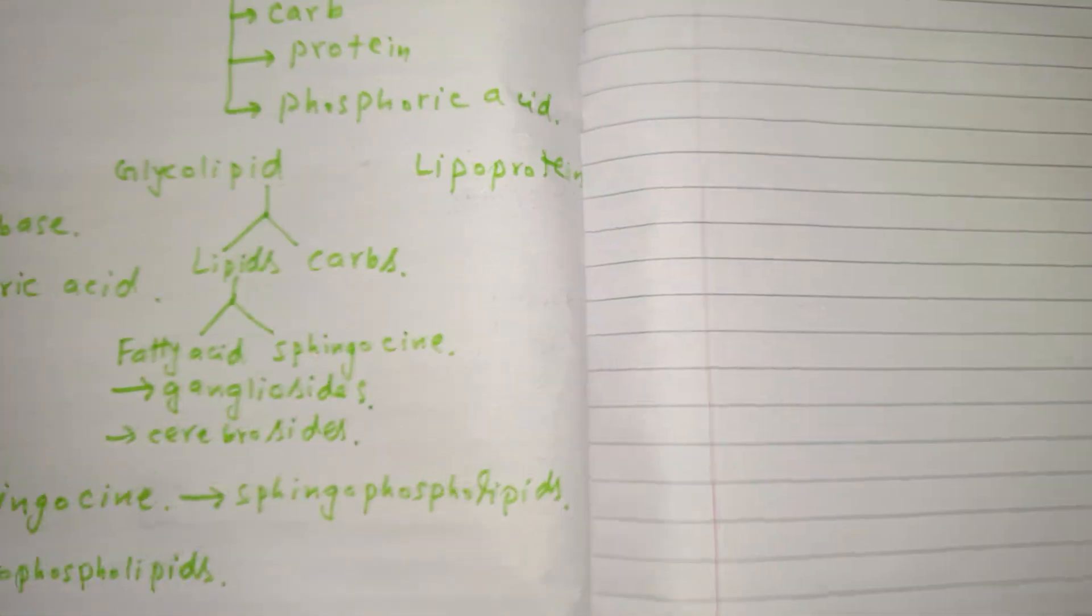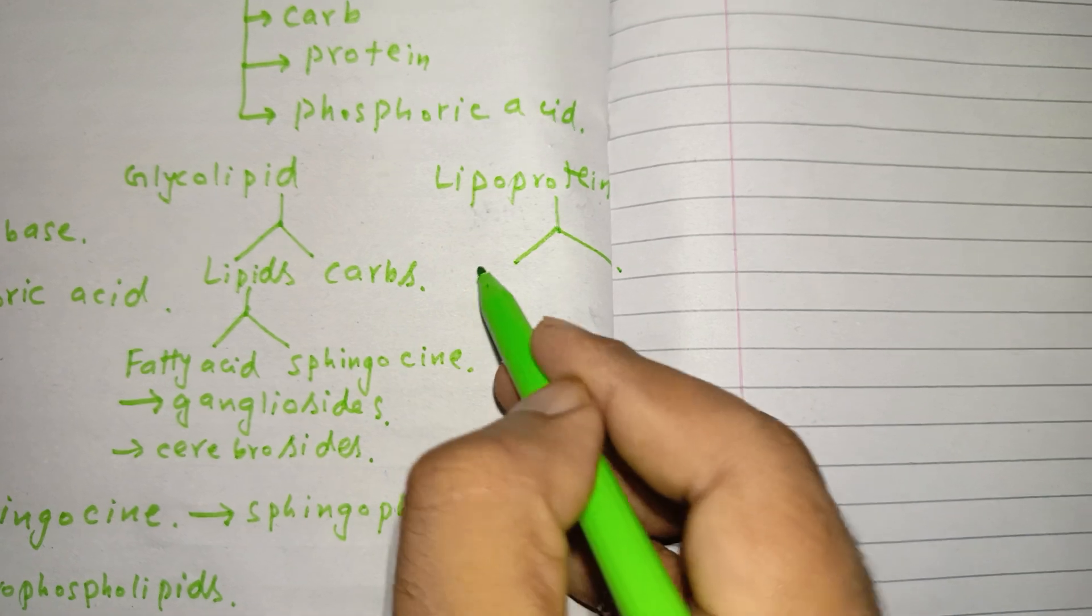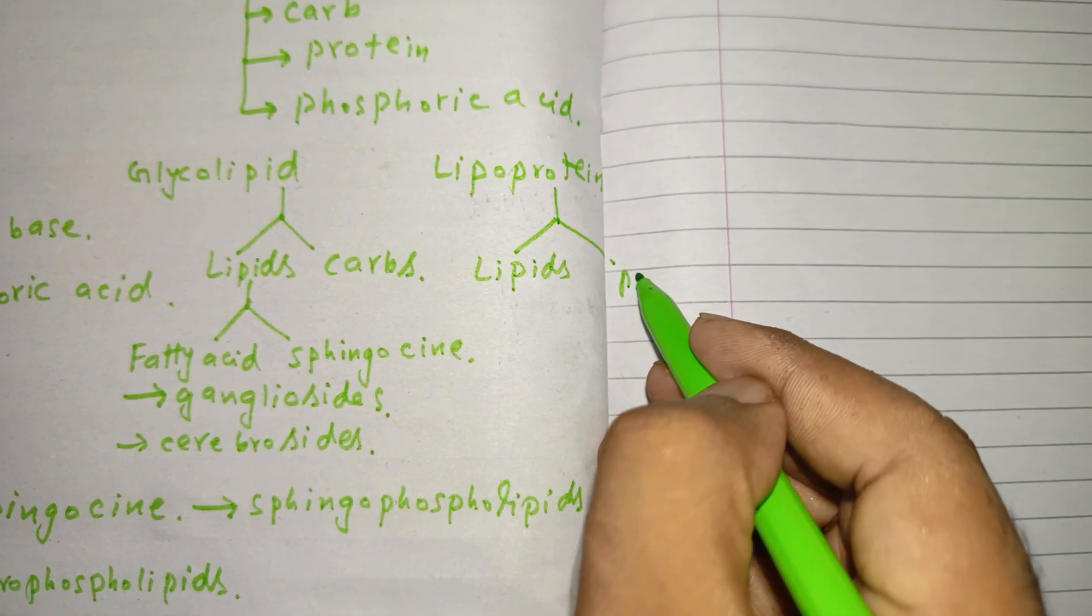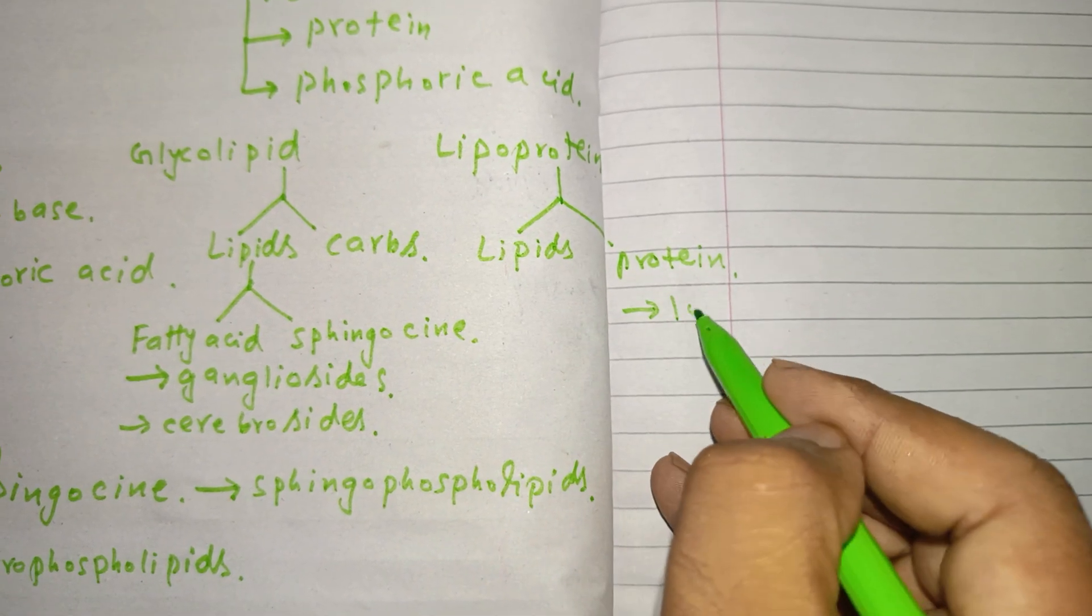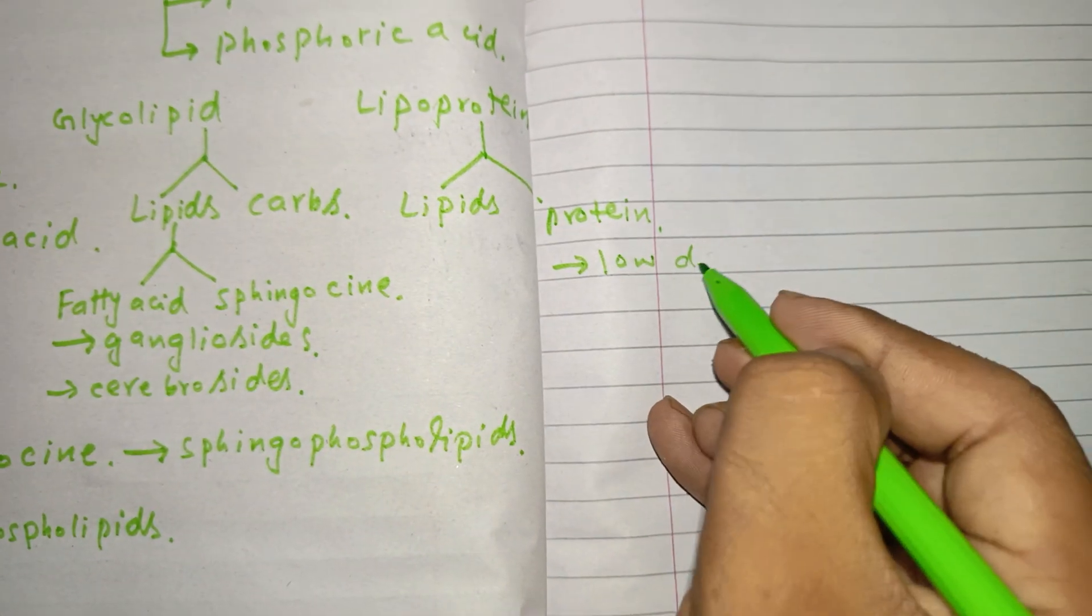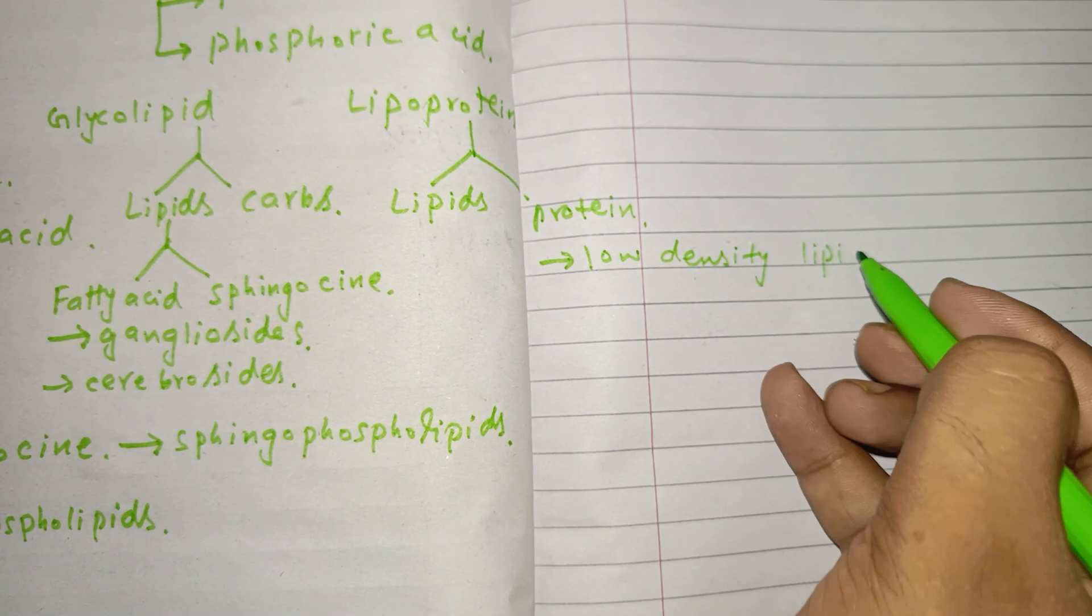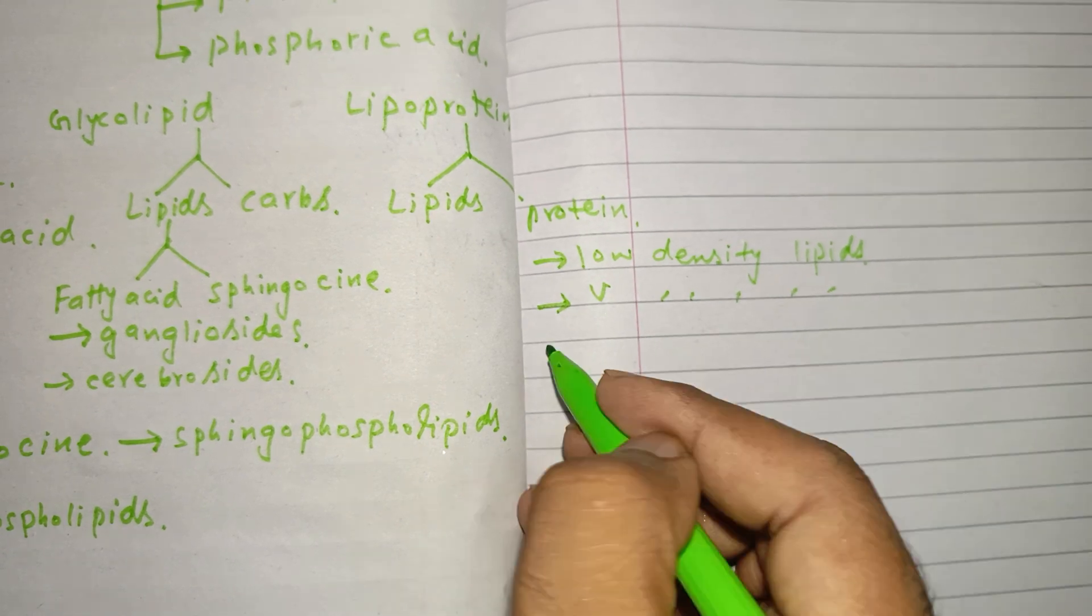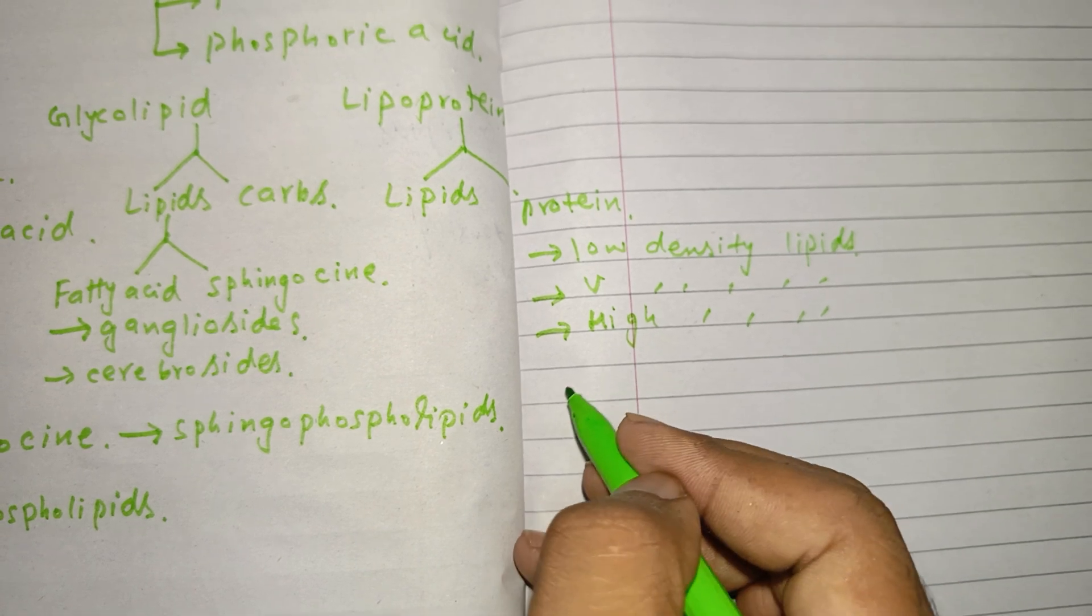The third one is lipoprotein. Lipoprotein, as the name indicates, consists of lipids and proteins. The examples of lipoproteins are low density lipids, very low density lipids, high density lipids, and chylomicrons.